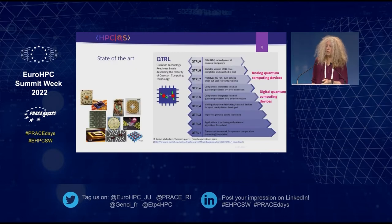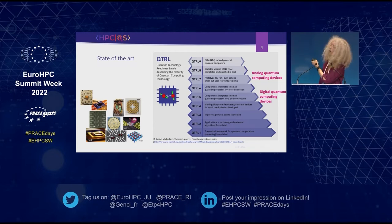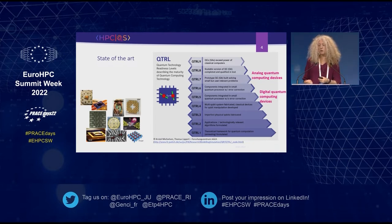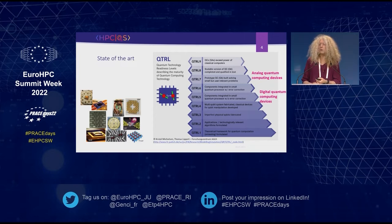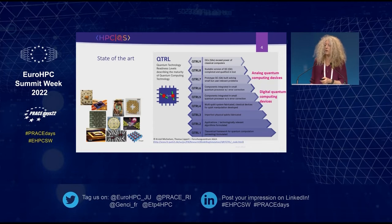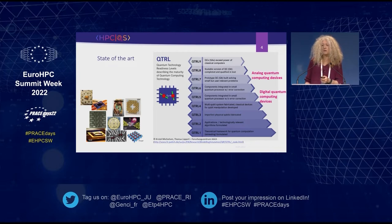There are many different quantum computing devices that have been developed, and the question is what we can use them for in practical quantum computation. Thomas Lippert and I thought we needed to classify these devices — not an easy or objective task — and we came up with a QTRL scheme, similar to what NASA uses for classifying their technologies.